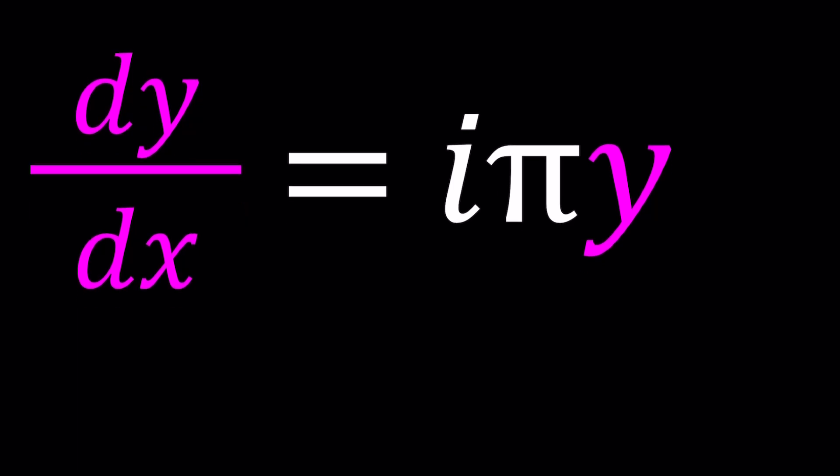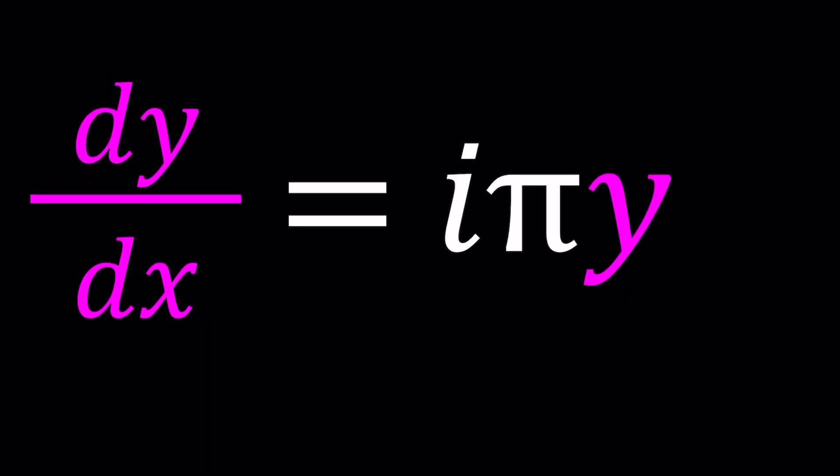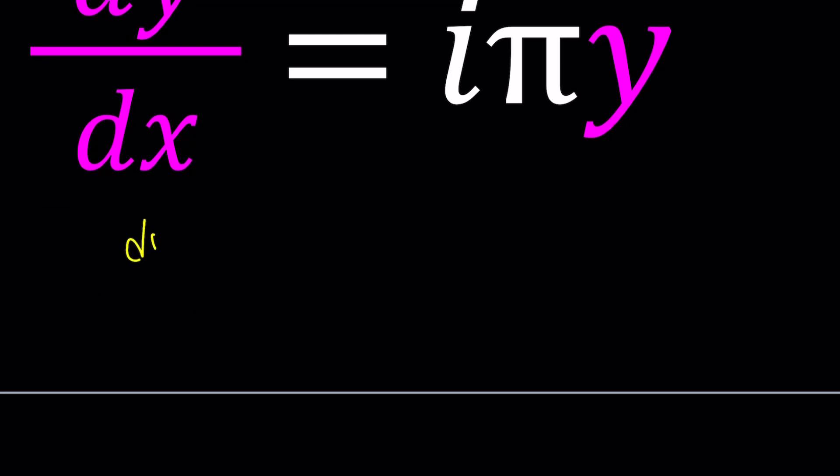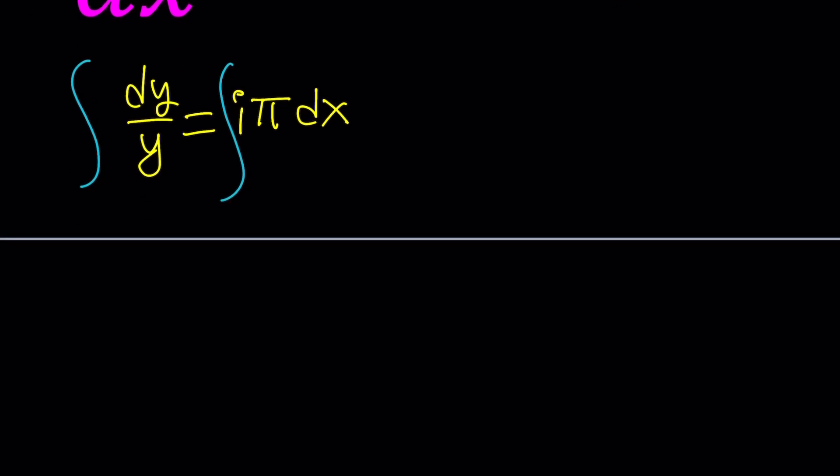I'm going to write this with the variable separated because this is a separable differential equation. Let's divide by y. That gives us dy/y. And then bring the dx on the right hand side. That's going to be iπ dx. Once you separate the variables you can integrate both sides with respect to each variable. That will be fairly easy most of the time.